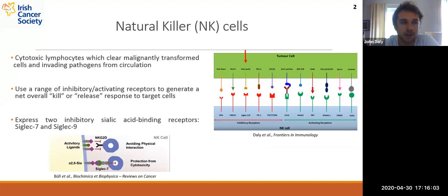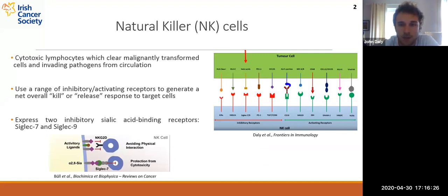Natural killer cells, or NK cells, are cytotoxic lymphocytes with an innate ability to recognize and destroy transformed cells. They do this by employing a wide range of both activating and inhibitory receptors on their cell surface. Binding of these receptors to their concomitant ligands results in the generation of an overall net killer release signal determining the target cell's fate. Classic pathways such as MHC class I binding to inhibitory receptors are well understood; however, the potential for sialylated ligands to act as self-associated molecular patterns is less well recognized.